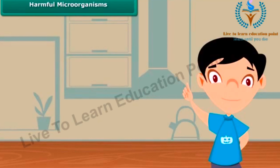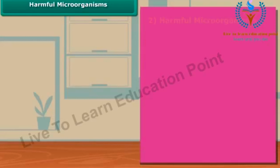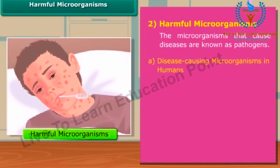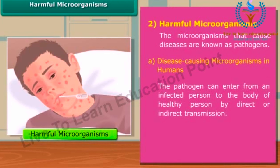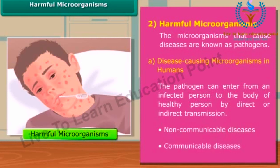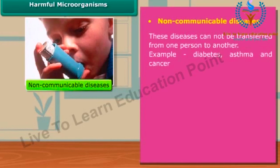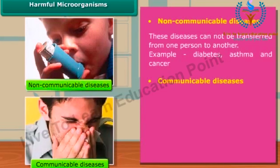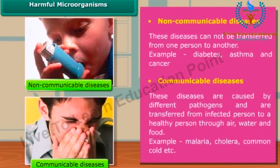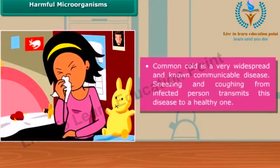After discussing helpful and friendly microorganisms, let's learn about harmful microorganisms. We will start with microorganisms that cause diseases in humans and animals. The microorganisms that cause diseases are known as pathogens. We can classify diseases into two categories: non-communicable and non-infectious diseases, and communicable or infectious diseases. Non-communicable diseases cannot be transferred from one person to another, while communicable diseases are transferred from an infected person to a healthy person by means of air, water, food, etc. Common cold is a very common example of a communicable disease.